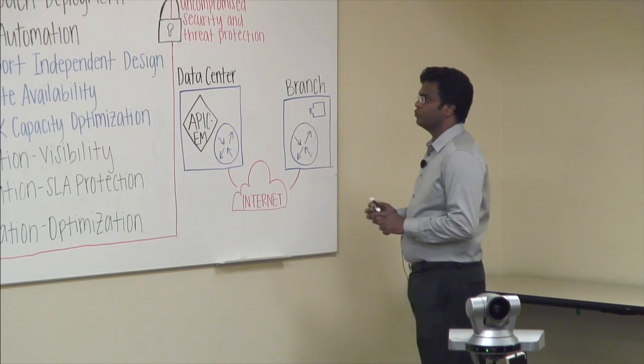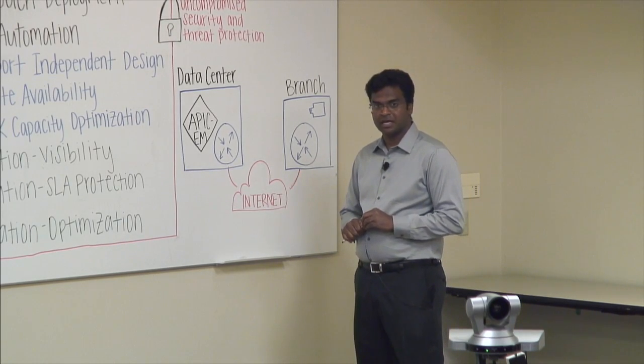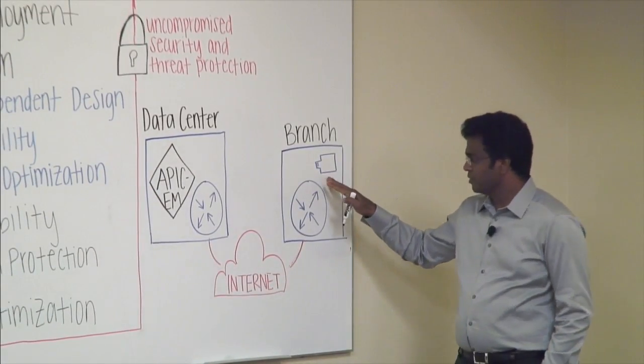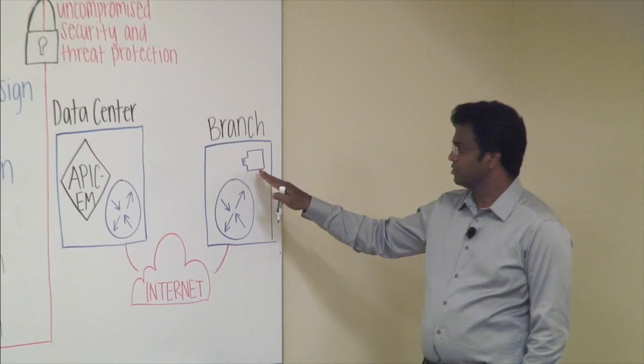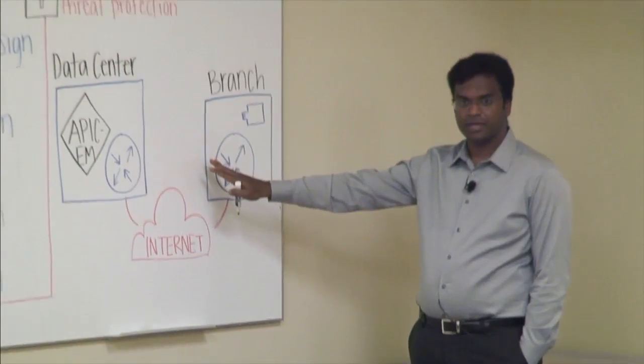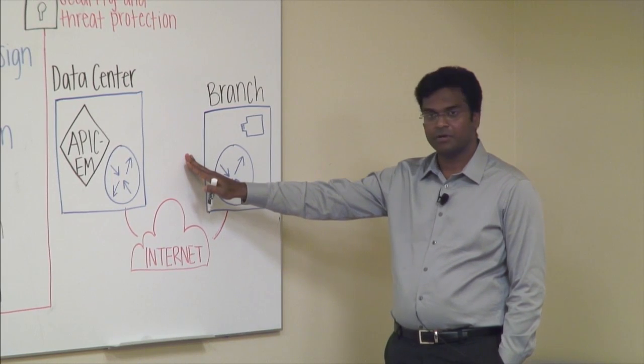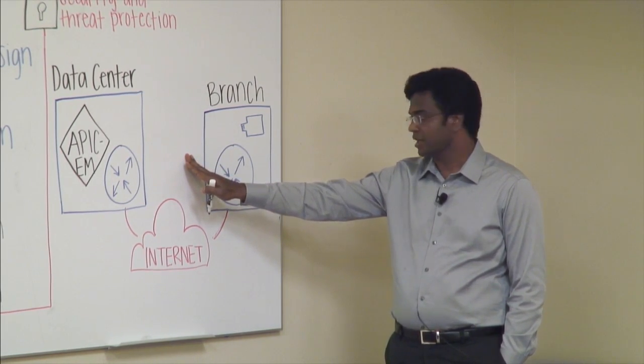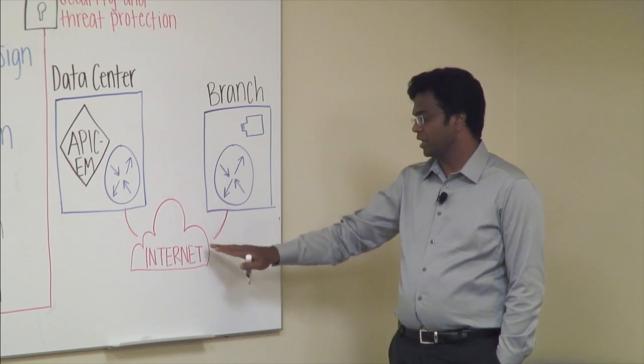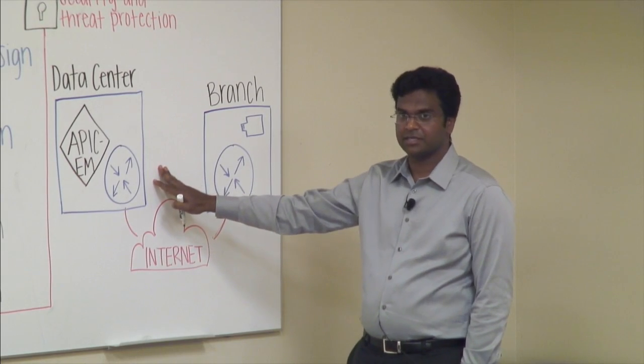Now, what we can do right now with Epic EM, with the controller-based architecture, is we can enable zero-touch deployment using a USB. So from a technician point of view or from a customer point of view, the only thing that needs to be done for zero-touch deployment is plug in this USB, plug in the Ethernet cable, and the branch comes up. That's all is needed.